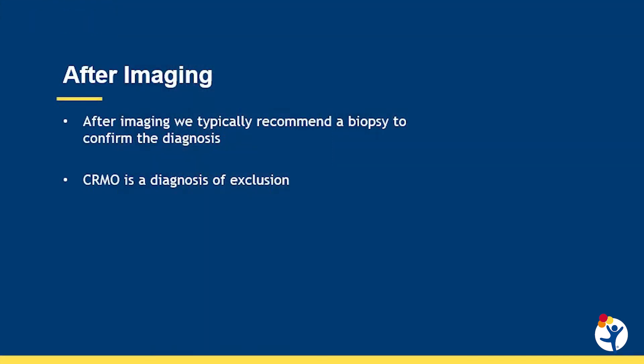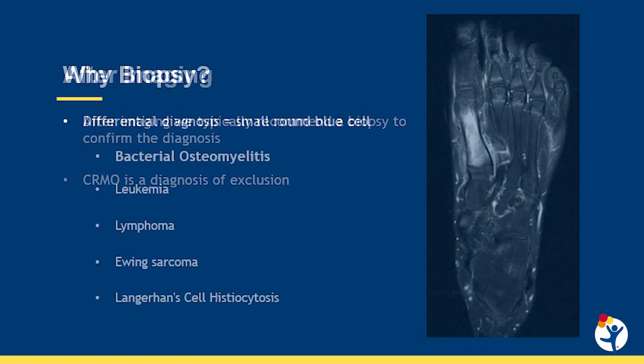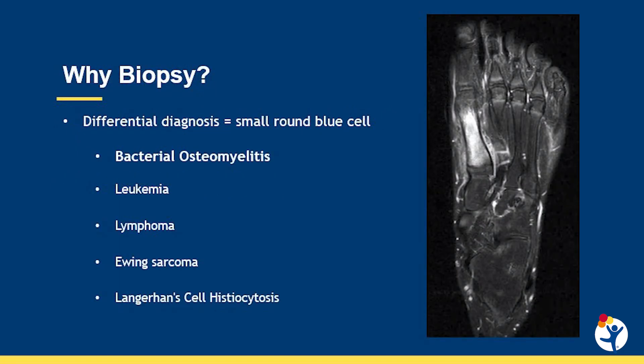After we get imaging for patients and we suspect CRMO, we generally recommend a biopsy to confirm the diagnosis. The reason for that is that CRMO is a diagnosis of exclusion. When we have T2 hyperintense changes in bones on MRI, the differential diagnosis includes the small round blue cell processes.